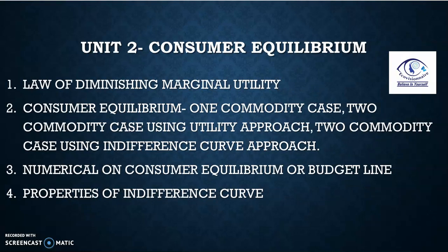Coming to the second very important unit, we have two parts: consumer's equilibrium and demand/elasticity of demand. In consumer's equilibrium, we have to cover the law of diminishing marginal utility, which is the base of all other questions. Very important: you can have questions on one commodity case, two commodity case using cardinal utility approach, and two commodity case using the indifference curve approach — also called ordinal or Hicksian approach. You may also get a numerical on consumer's equilibrium, budget line, budget equation, or budget set.